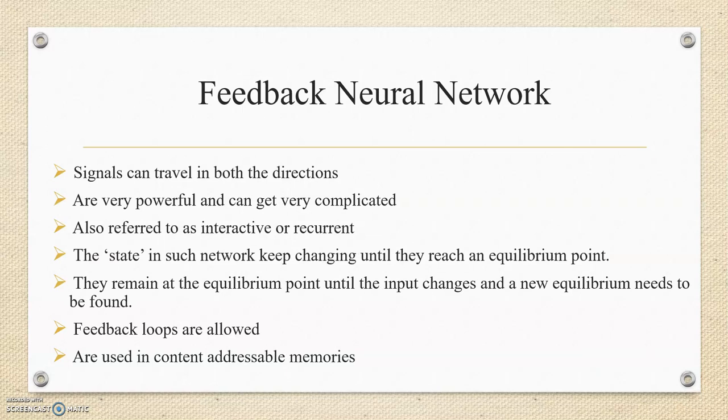The second type is Feedback Neural Network. Signals can travel in both directions in Feedback Neural Network. Feedback Neural Networks are very powerful and can get very complicated. Feedback Neural Networks are dynamic. The state in such networks keep changing until they reach an equilibrium point. They remain at this equilibrium point until the input changes and a new equilibrium needs to be found.